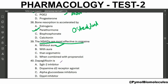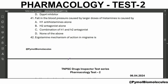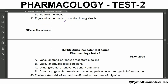Dapagliflozin is an SGLT2 inhibitor — sodium-glucose co-transporter 2. Falling blood pressure caused by a large dose of histamine is caused by a combination of H1 and H2 antagonists. Ergometrine's mechanism of action in migraine is constricting the cranial vessels and reducing perivascular neurogenic inflammation.